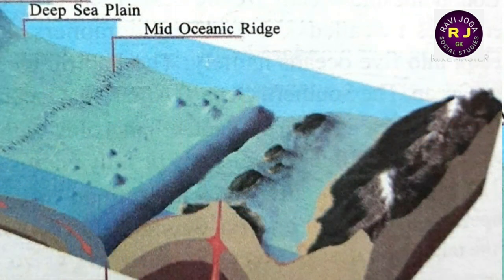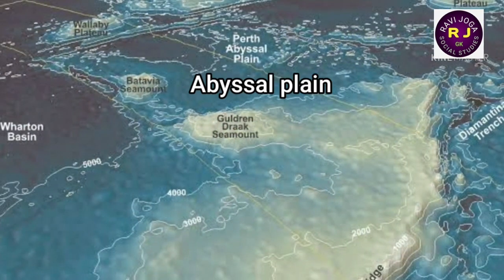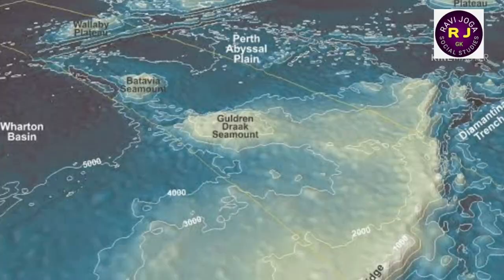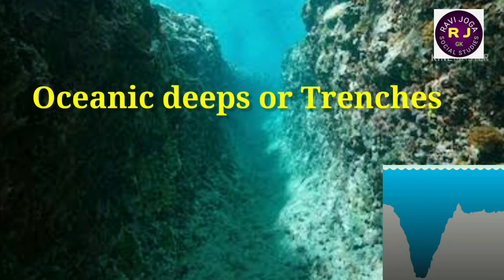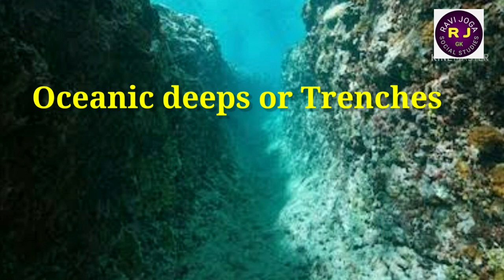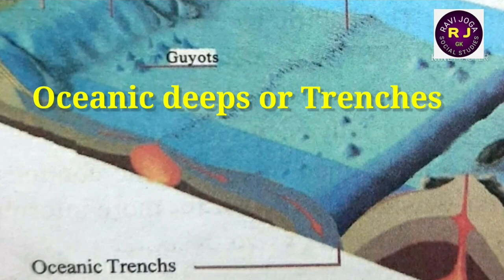Oceanic deep sea plains, also called abyssal plains, are gently sloping areas of the ocean base. There are large, narrow trenches that are not located in the middle of oceans; mostly they are found very close to the continents. These are helpful in the study of plate movements.